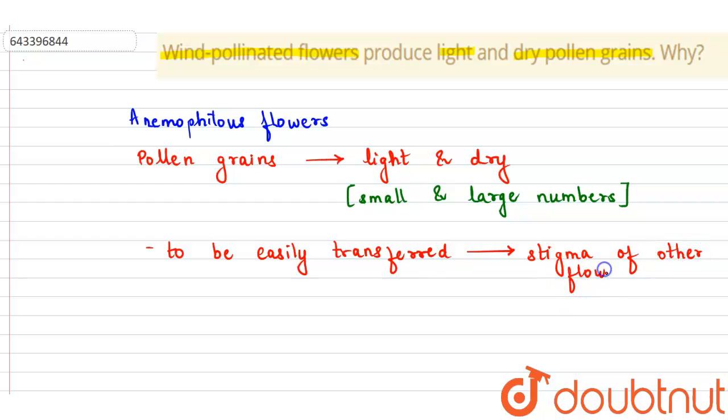That's the reason why pollen grains which are produced by wind pollinated flowers are light and dry. So here we have answered the question. Thank you.